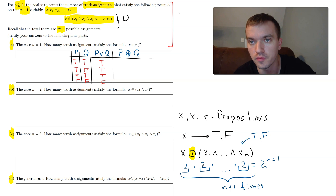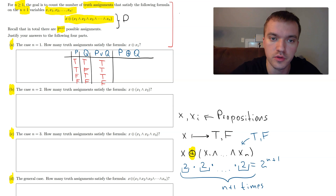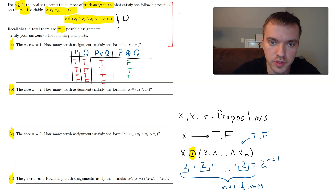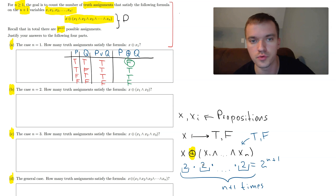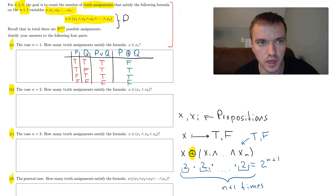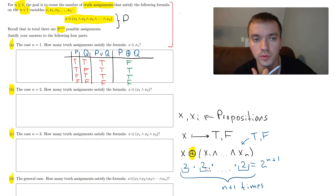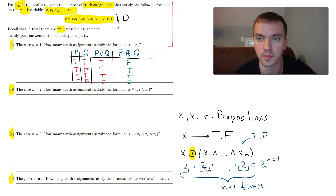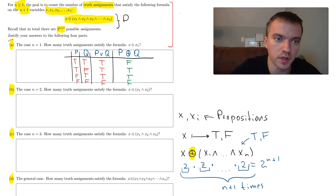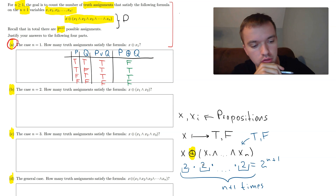Exclusive OR (XOR) is true only when exactly one of the variables is true — if both are true, the output is false. So for XOR: true/true gives false, true/false gives true, false/true gives true, and false/false gives false — only two true outcomes out of four. The general advice is: make sure you understand all symbols and definitions before attempting the problem.